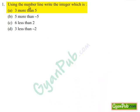Moving on to the first question of the second exercise. Using the number line, write the integer which is: a) 3 more than 5, b) 5 more than minus 5, c) 6 less than 2, d) 3 less than minus 2.